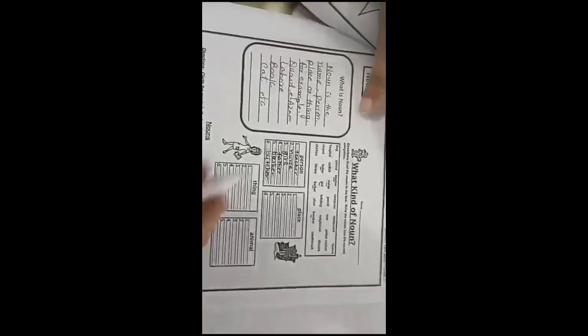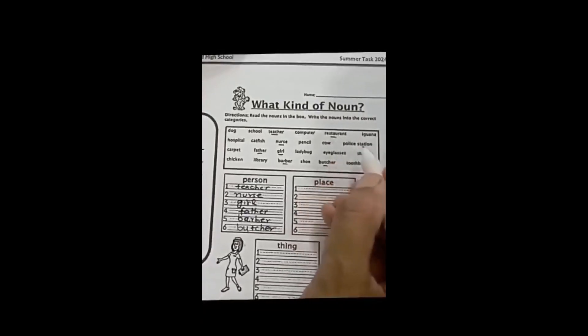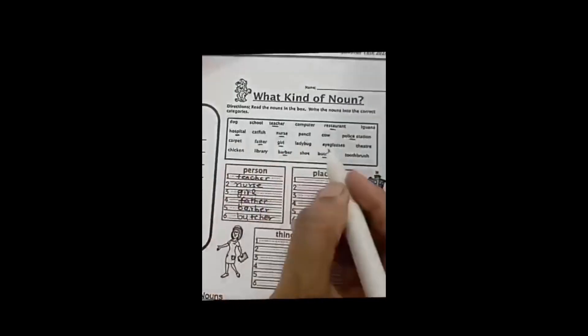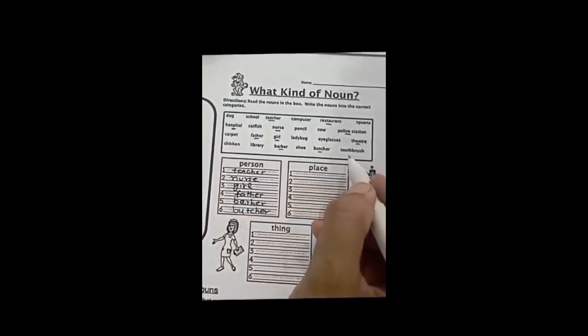The second one is place. Let's check it out. Restaurant, police station, hospital, theater, library.